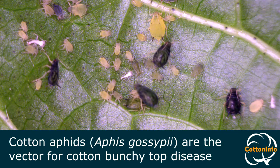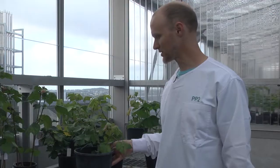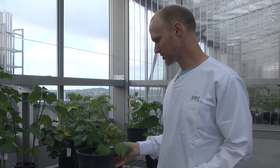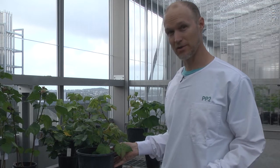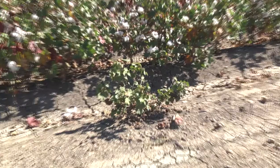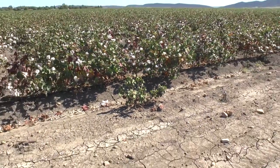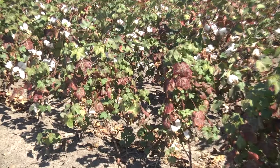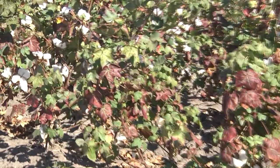Cotton aphids are the vector for the cotton bunchtop virus. Once the plants are infected they tend to show a range of symptoms over time. If we're out in the paddock and we're trying to decide whether a plant might be infected with cotton bunchtop virus, we can look for really distinctive symptoms.